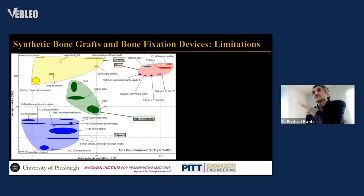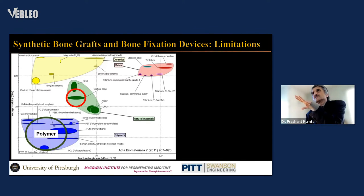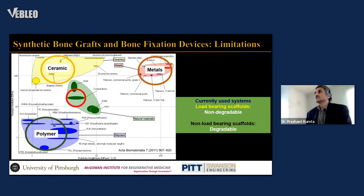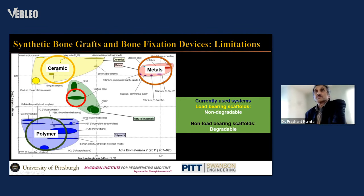The synthetic bone grafts typically used today include autologous bone — particulate or cancellous — natural or synthetic polymers, and ceramic materials such as bioglass or crystalline hydroxyapatite. Metals are also used; the most common are non-degradable metals like titanium and stainless steel. Currently, load-bearing systems use non-degradable metals, while non-load-bearing scaffolds use degradable materials — polymers which are too soft, or ceramics which are very hard but lack toughness, while metals are stiff but cannot resolve.